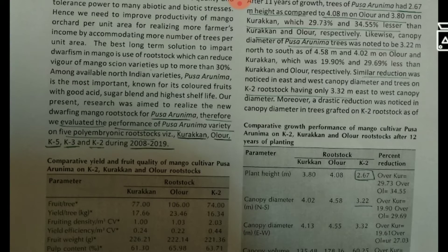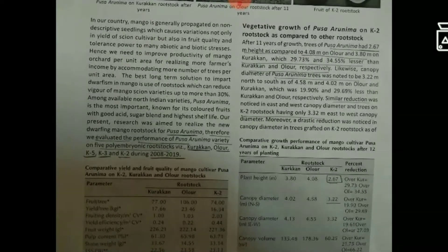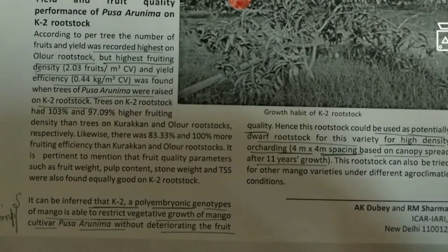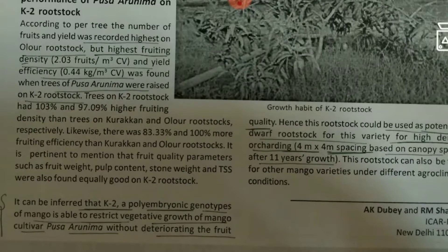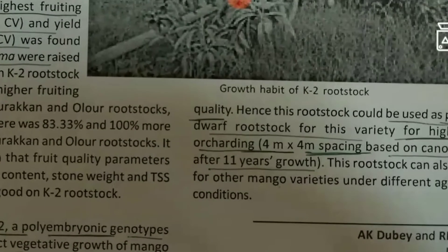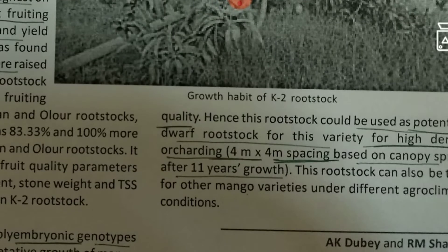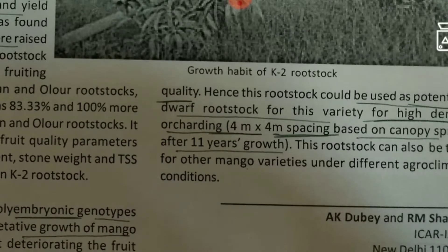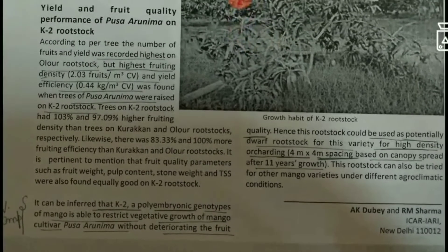The study duration is from 2008 to 2019. The actual finding is that K2, a polyembryonic genotype of mango, is able to restrict vegetative growth of mango cultivar Posha Arunima without deteriorating the fruit quality. The important point is that K2 rootstock could be used as a potential dwarf rootstock for Posha Arunima under high density planting with a spacing of 4 meters by 4 meters.